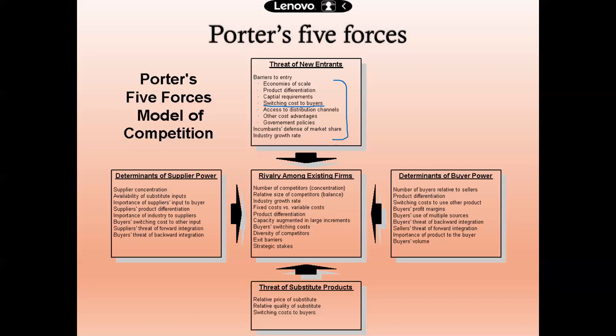Any inputs required from suppliers can actually manipulate the market because they have the power and know the market very well. If you are successful in holding the supplier, you can gain a significant market advantage. Supplier power factors include: availability of substitute inputs, importance of the supplier's input to the buyer, supplier product differentiation, importance of the industry to the supplier, buyer switching costs, and the supplier's threat to forward integration versus backward integration.